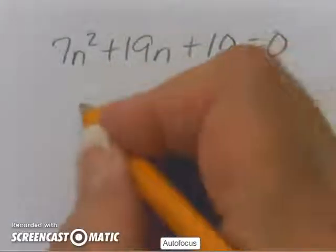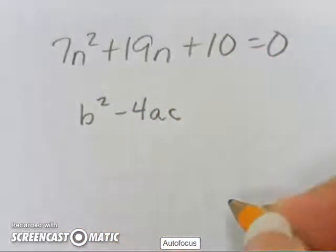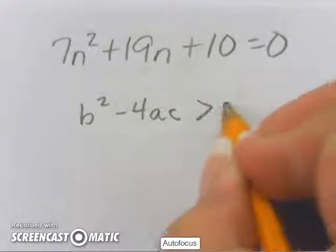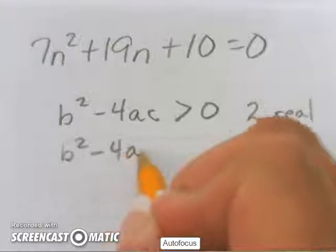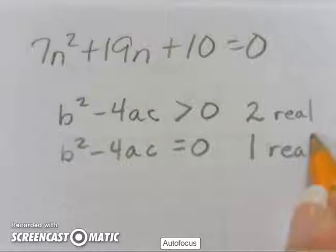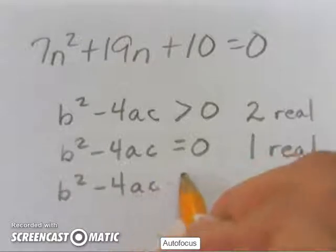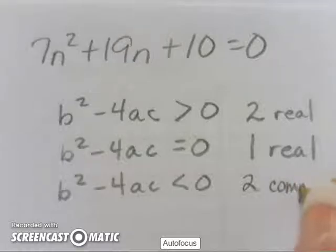The discriminant is b squared minus 4ac. When this is a positive number, when it is greater than zero, I have two real solutions. When this value is equal to zero, I have one real solution. When this value is less than zero, I have two complex solutions.